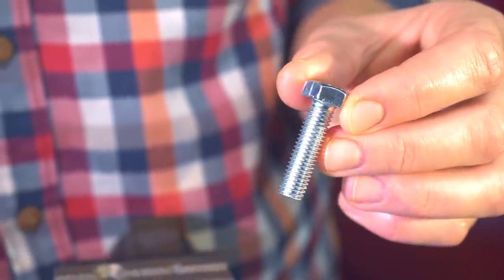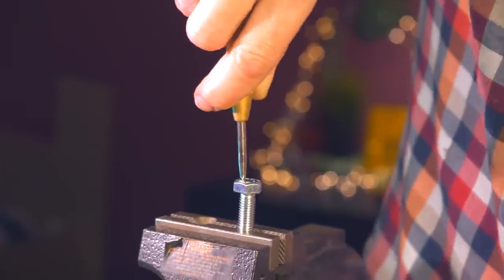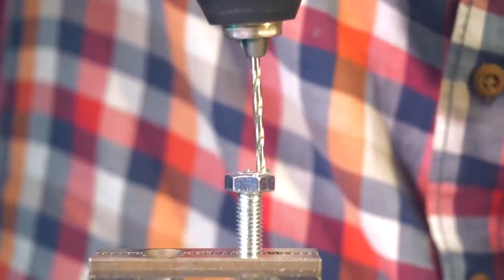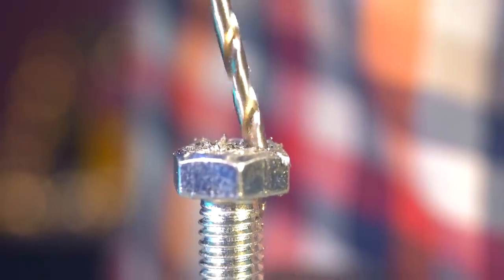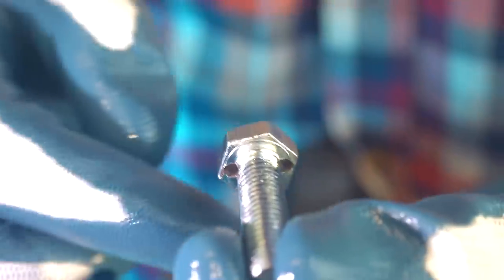Take an ordinary bolt, fix it in a vise, and after making two points in about these places, start drilling the hole straight. And as the drill begins to enter the material, move it a little to the side at an angle. That way we will have two holes in the head.